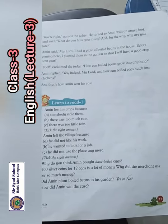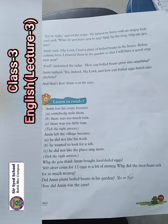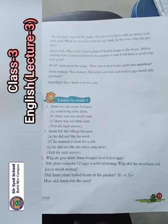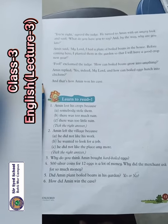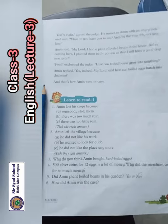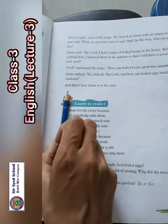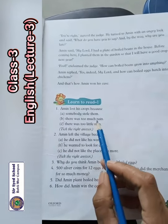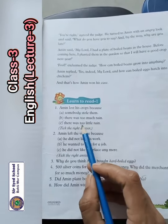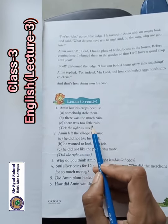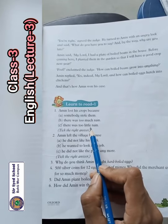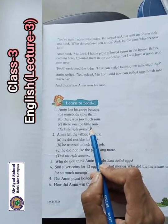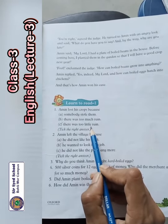Now come towards page number thirteen, question number one. Ameen lost his crops because: somebody stole them; there was too much rain; or there was too little rain. As you have read the text, there was too little rain.